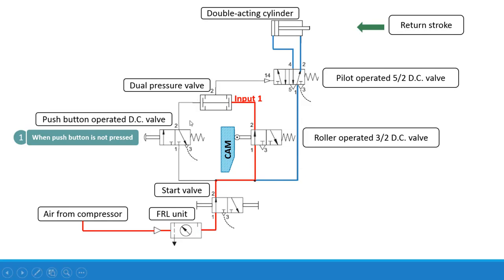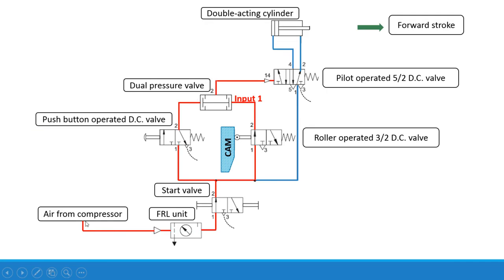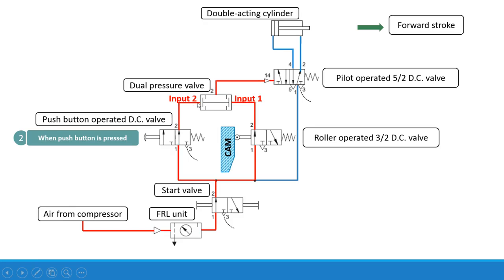Now we have to understand the circuit when the second input is provided. When we operate this particular push button — when it is pressed — then the left envelope mode will be present here. Air from the compressor enters into the FRL unit — filter, regulator and lubricator unit — then through the start valve. The cam is pressing the roller so the left envelope mode, which is the open position, provides the first input to the dual pressure valve. When the push button is pressed, we get the left envelope mode, and the air enters from 1 to 2 and is given as the second input to the dual pressure valve.